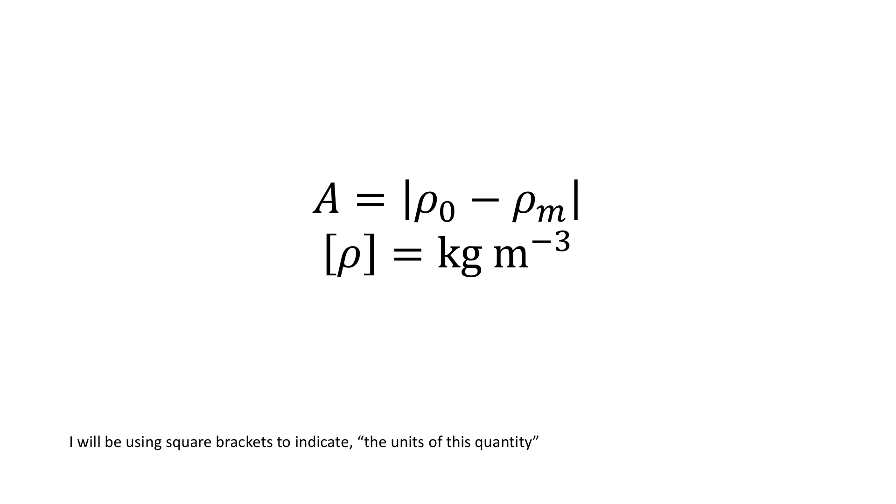So we have a quantity which represents this difference in density and we will call this A, and this is given by the absolute value of the difference between the object's density and the medium's density. Density is a quantity given by mass over volume, so the units of density are kilograms divided by meters cubed.